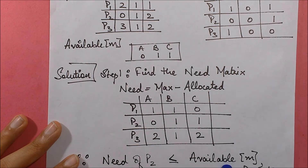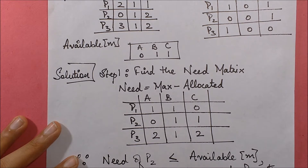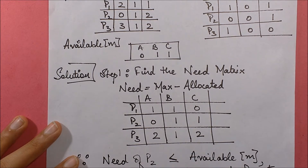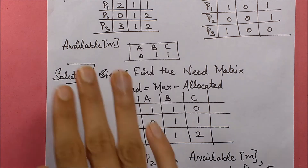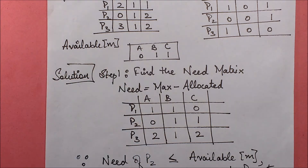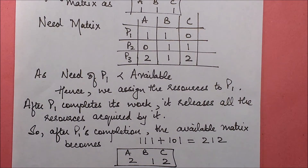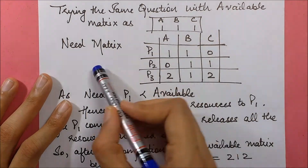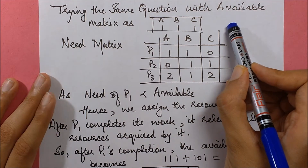To practice with another possibility, we change the available matrix to [1, 1, 1]. The situation is the same: we have the same need matrix, but the available matrix is now [1, 1, 1].